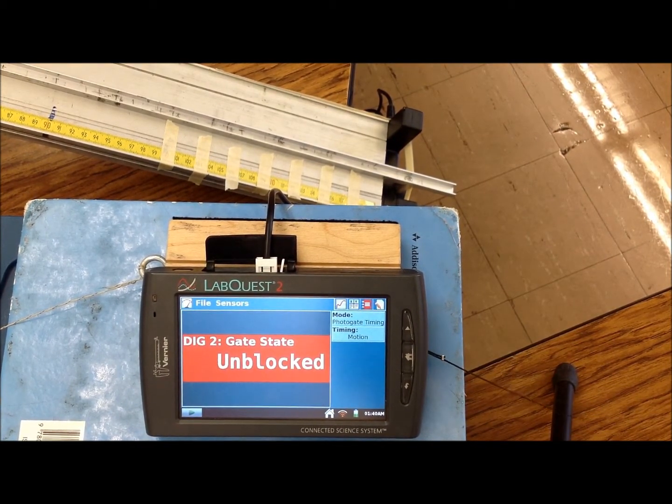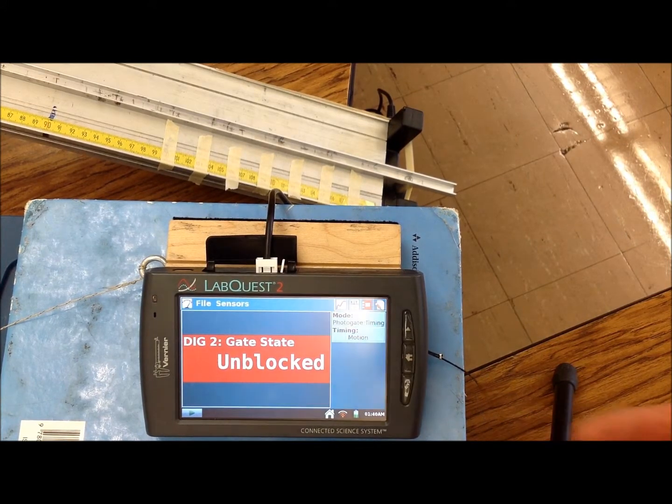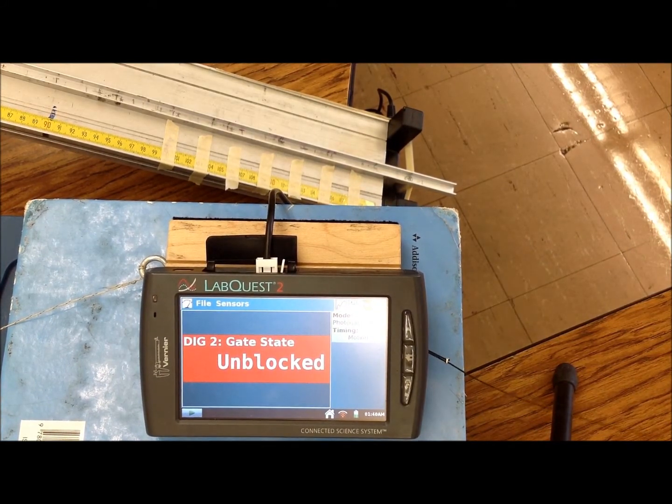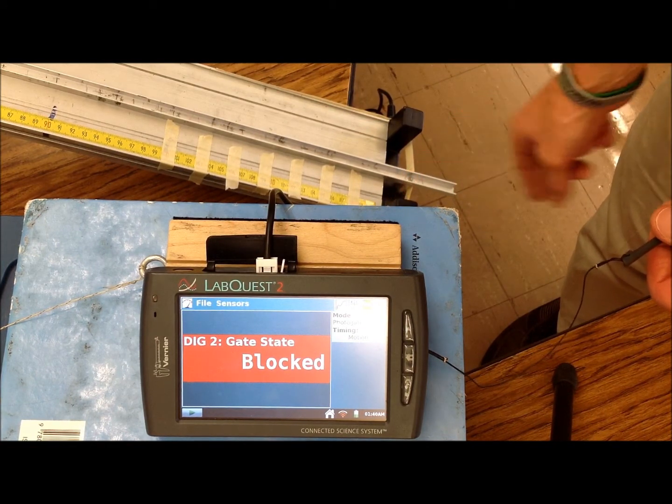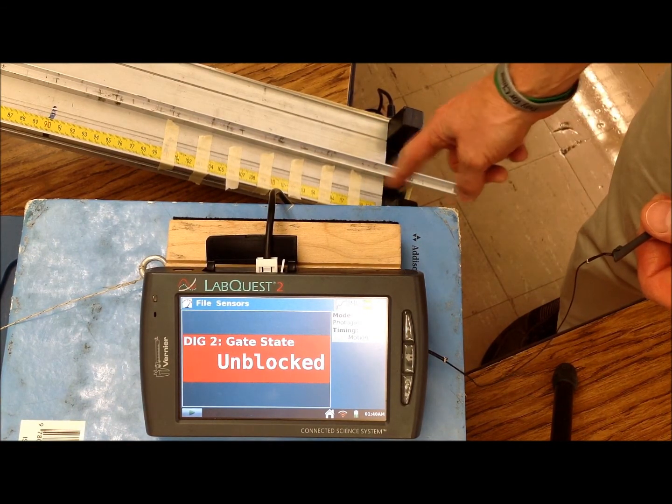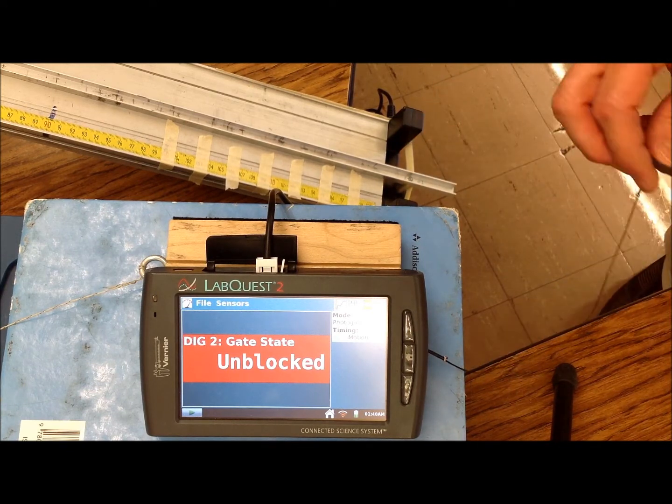When it comes on, you may get blocked or unblocked. All that means is there's an eye gate, photogate right here. If I stick my finger there, it's blocked. If I move, it's unblocked. We really don't have to worry about that right now. That's just letting you know what's going on.